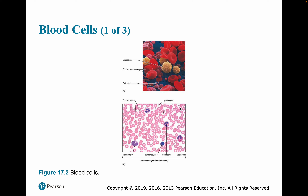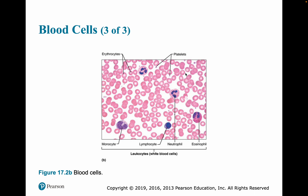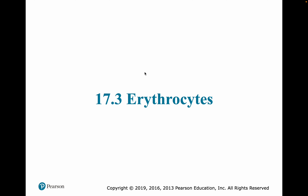Here is a microscope image of the formed elements — you'll see a very similar one in the lab on Thursday. Red blood cells are the most abundant. Also visible are platelets, eosinophils, monocytes, lymphocytes, and neutrophils, which are the white blood cells.